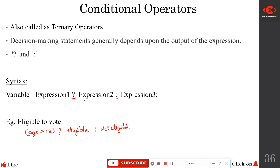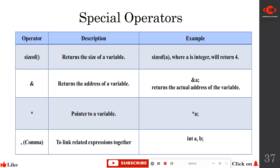Based on expression one, it is going to decide whether expression two or expression three gets executed. If expression one evaluates to true, expression two is executed. If expression one evaluates to false, expression three is executed. This is what the conditional operator does.